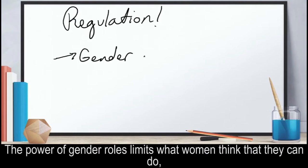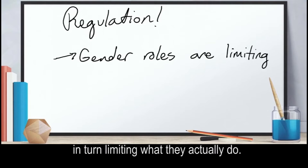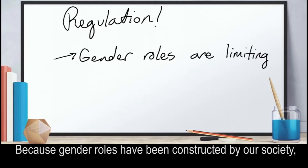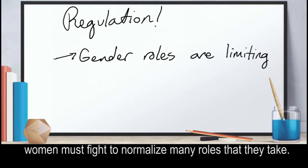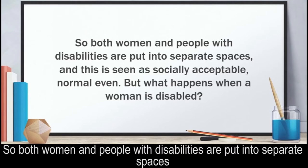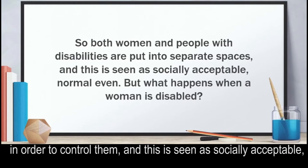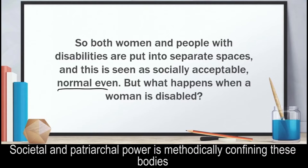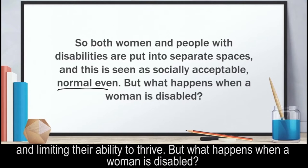The power of gender roles limits what women think they can do and in turn limits what they actually do. Because gender roles have been constructed by our society, women must fight to normalize many roles that they take. So both women and people with disabilities are put into separate spaces in order to control them, and this is seen as socially acceptable, normal, even. Societal and patriarchal power is methodically confining these bodies and limiting their ability to thrive.